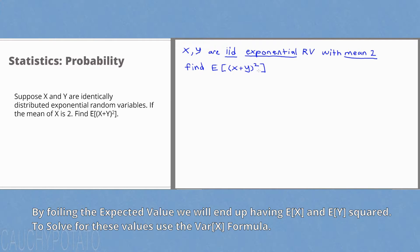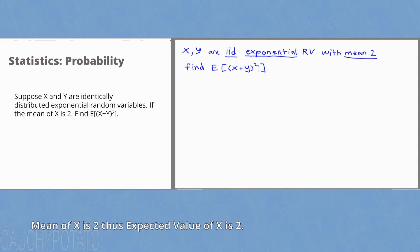We want the expected value of x plus y squared. We are going to need both the expected value of x squared and the expected value of y squared. The mean of x is 2, so the expected value of x is 2. Since it's identically distributed, the expected value of y is 2 as well.